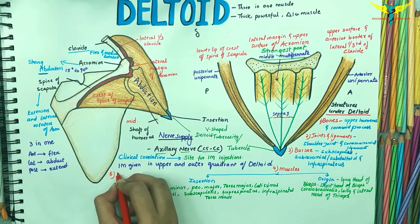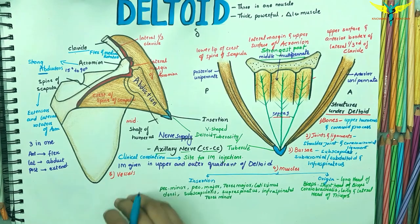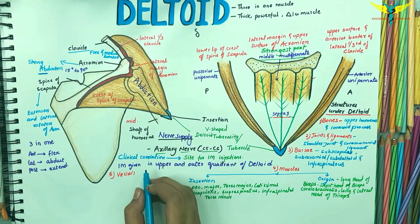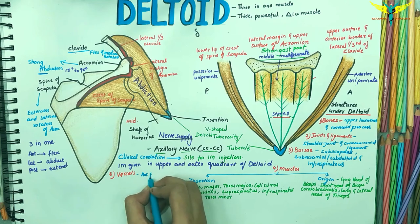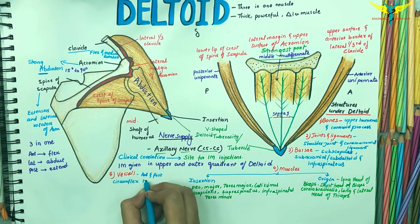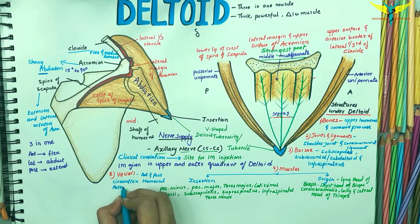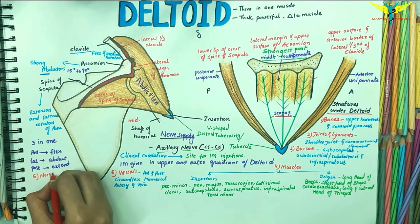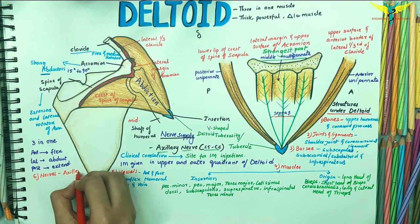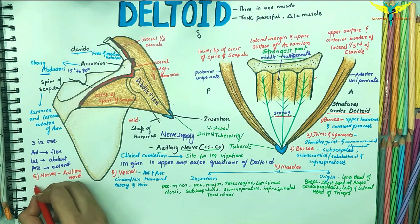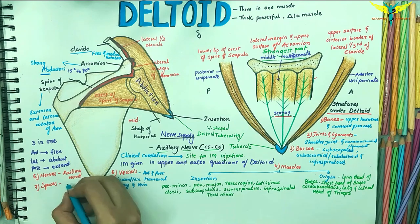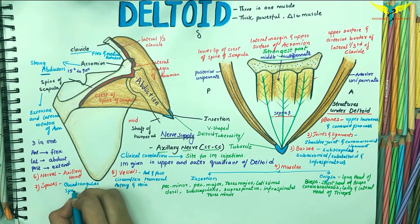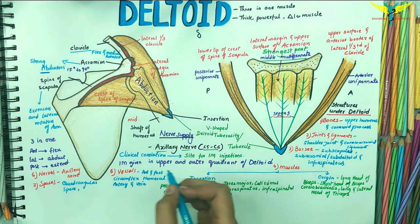The vessels under the cover of the deltoid are the anterior and posterior circumflex humeral artery and vein. The nerves under the deltoid are the axillary nerve, and the spaces are the quadrangular space and the triangular subscapular intermuscular spaces.